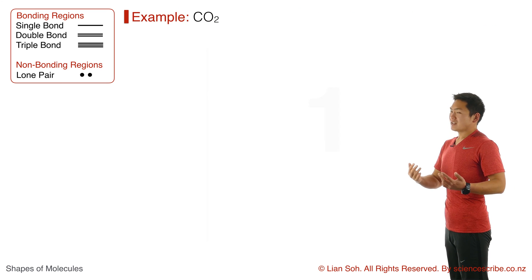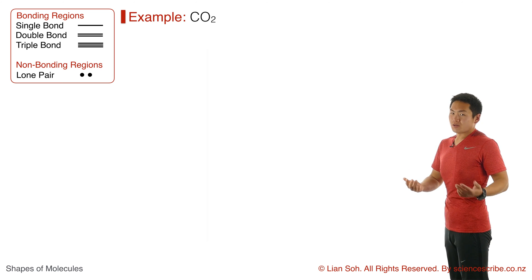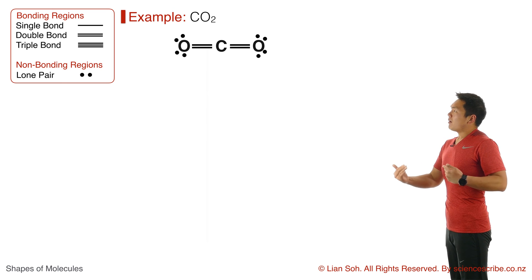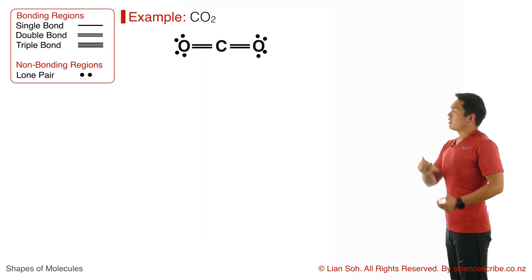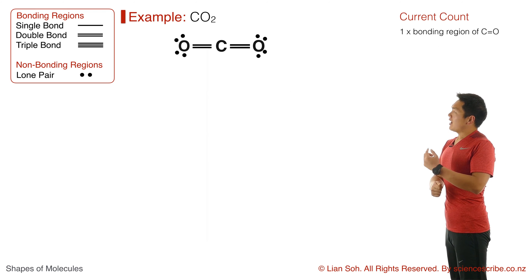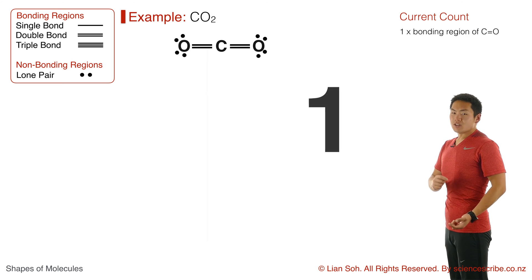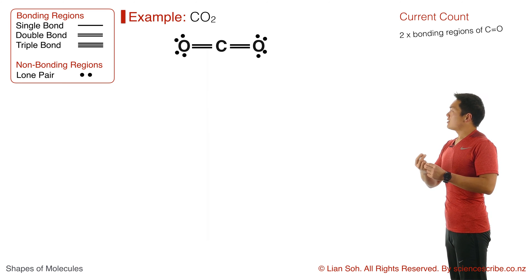Let's get into it and look at an example with carbon dioxide. Let's say we had to find the shape of the molecule for CO2. The first thing I'm going to do is put down a Lewis diagram for CO2. When counting regions of electron density, I'm only going to focus on the central atom — carbon. Coming out from carbon is a double bond to an oxygen: double bond, that's one region. On the other side is another double bond to an oxygen: double bond, one region. This means in carbon dioxide there are two regions of electron density around the central carbon atom, both occupied by bonding pairs of electrons.